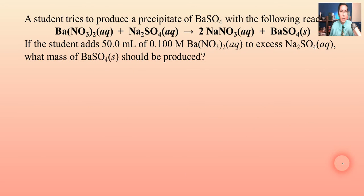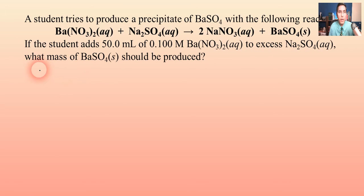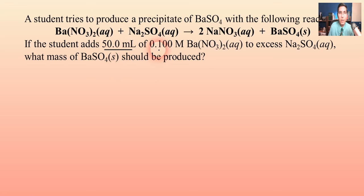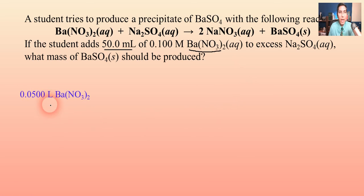Let's try this problem. A student tries to produce a precipitate of barium sulfate with the following reaction. The reaction is balanced. If the student adds 50 milliliters of 0.1 molar barium nitrate solution to excess sodium sulfate solution, what mass of barium sulfate solid should be produced? We're going to start with what's given — 50 milliliters of barium nitrate, which I'll convert to 0.05 liters. The question asks for the mass of barium sulfate.